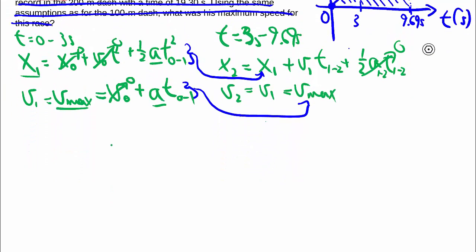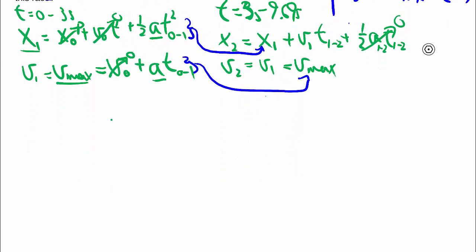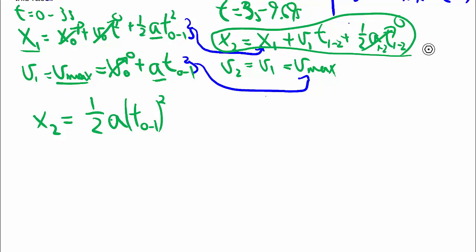So let's get a little more space here. So taking this equation and subbing in the appropriate things, I got x₂ is equal to x₁, which is in turn one-half a t₀ to 1 squared, plus v₁, which is v-max, which is this expression, so that's a t₀ to 1, times t₁ to 2, plus nothing.